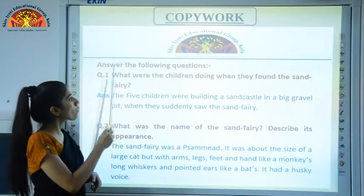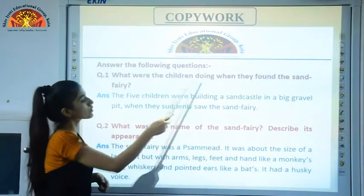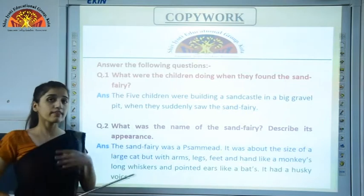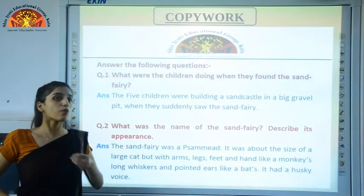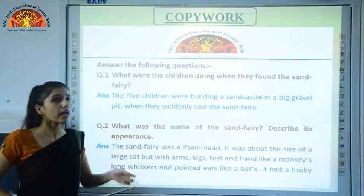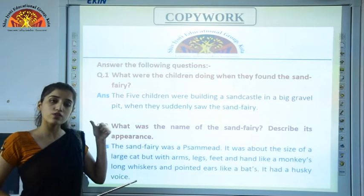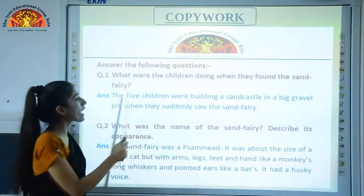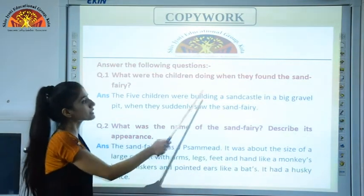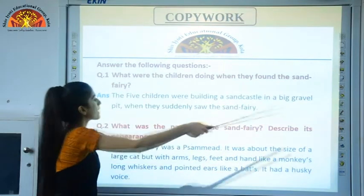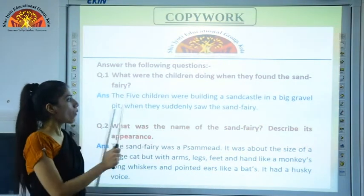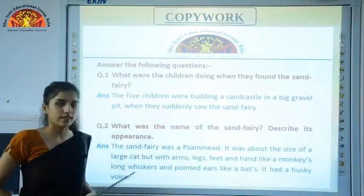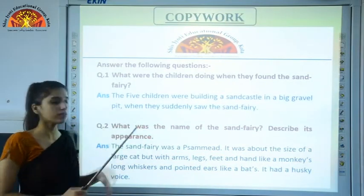Copy work question number one: What were the children doing when they found the sand fairy? As mentioned earlier, they were building a sand castle. So the answer is: the five children were building a sand castle in a big gravel pit when they suddenly saw the sand fairy.